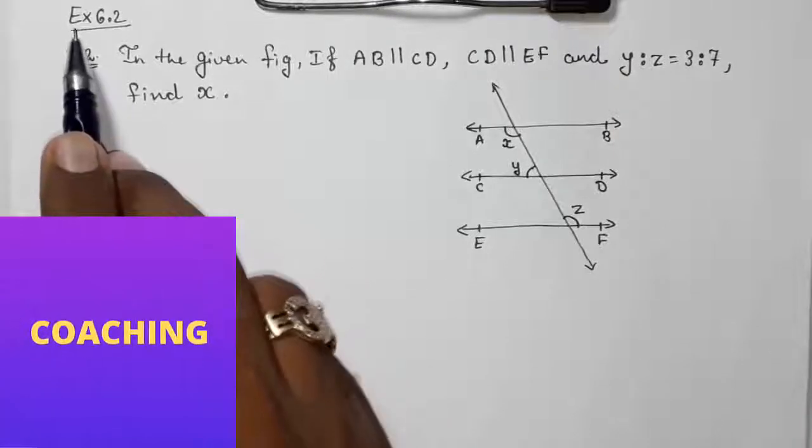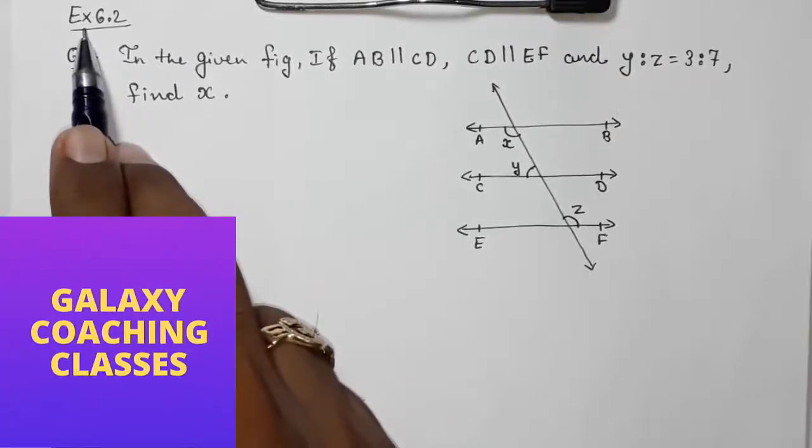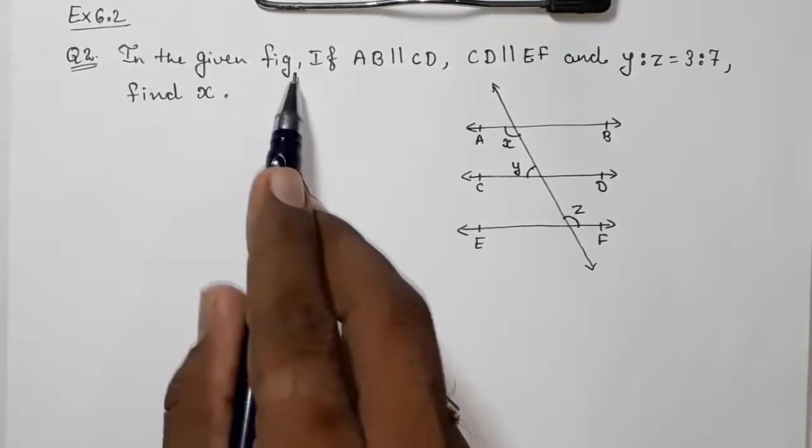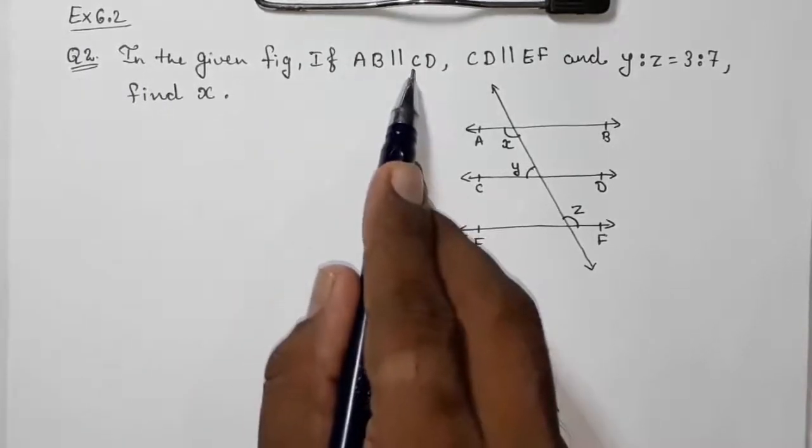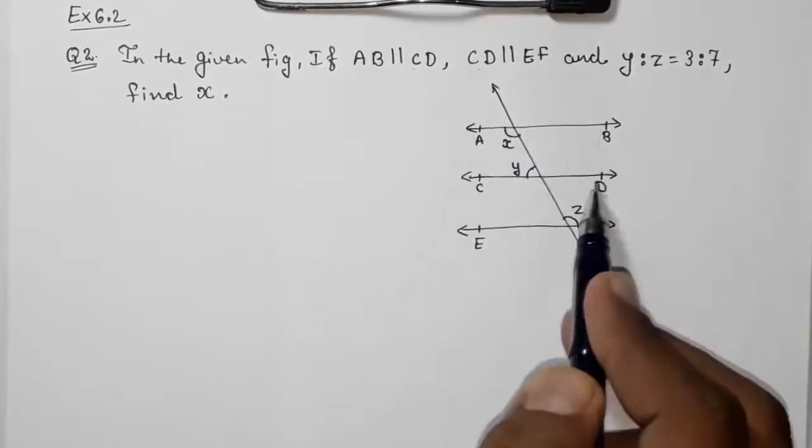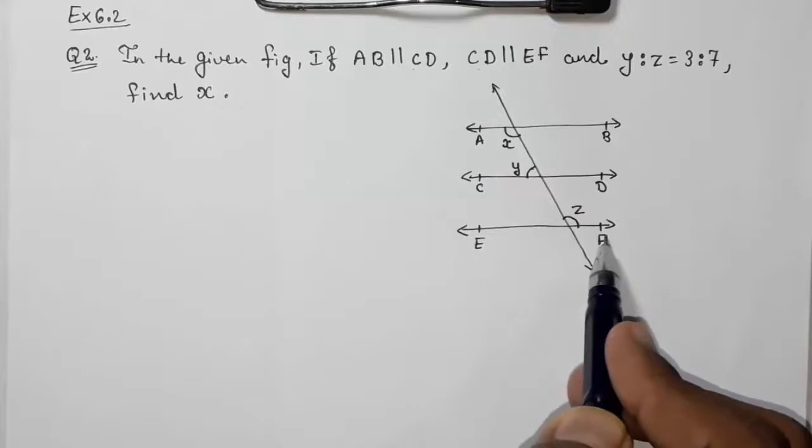Hello friends, today we are going to solve CBSE class 9th exercise 6.2 question number 2. In the given figure, AB is parallel to CD and CD is parallel to EF.